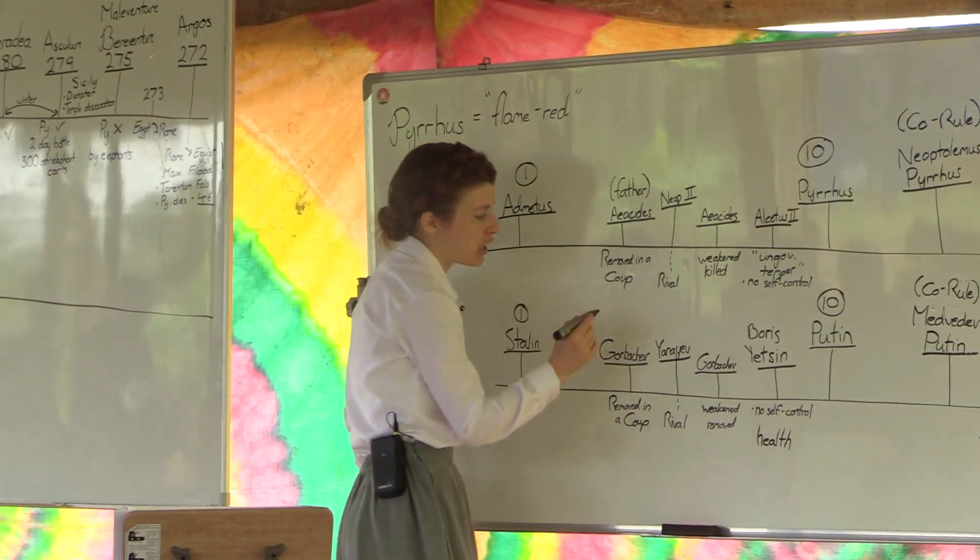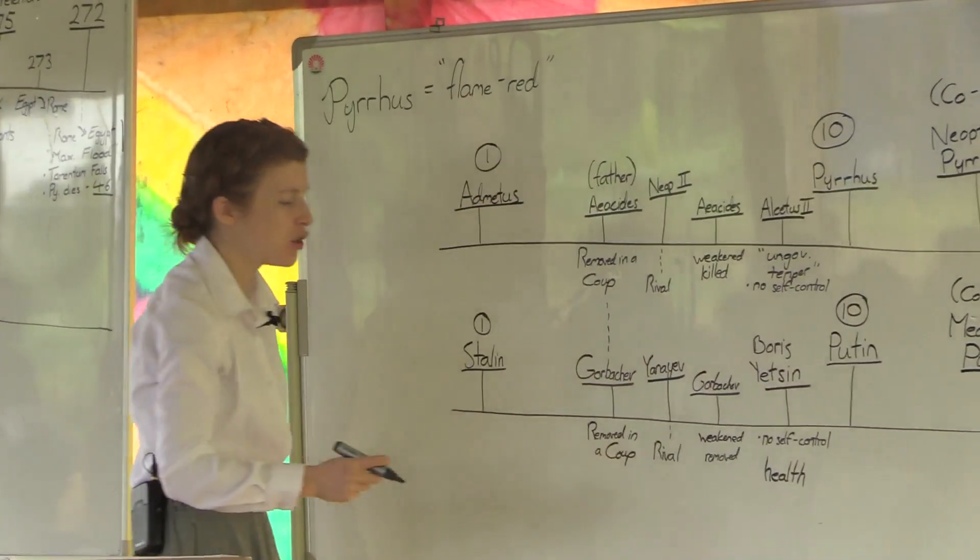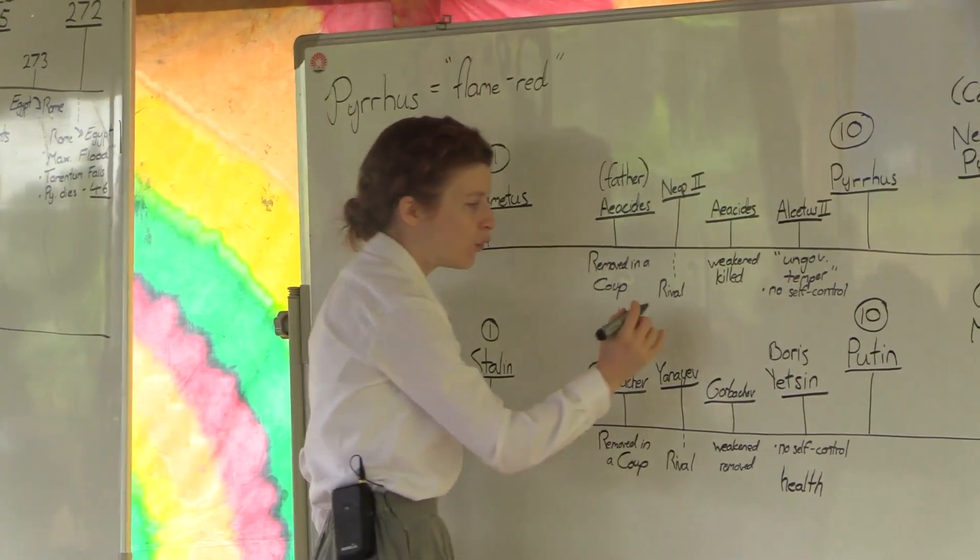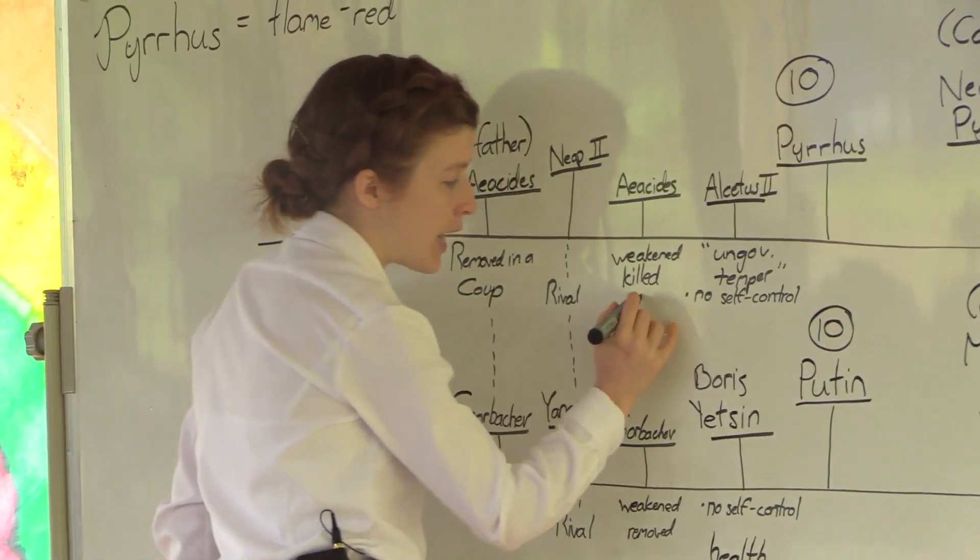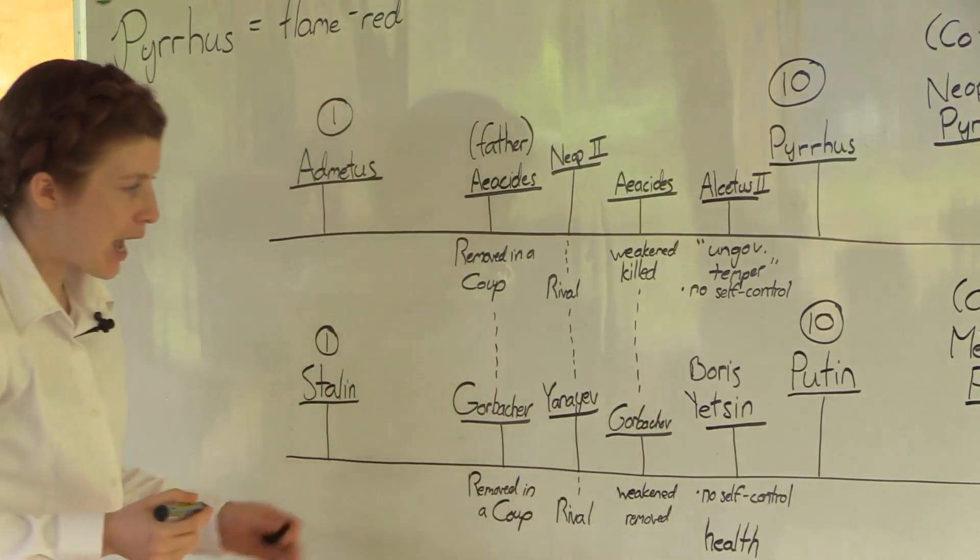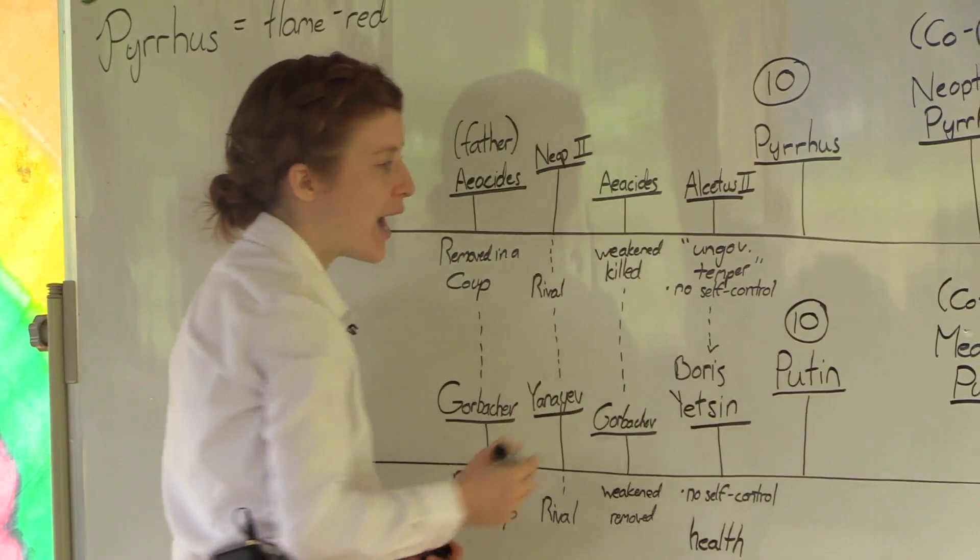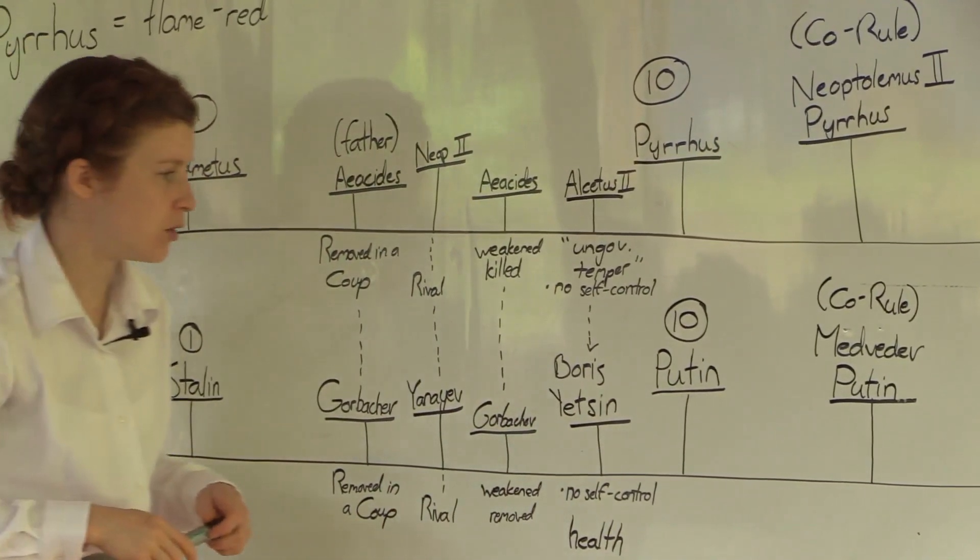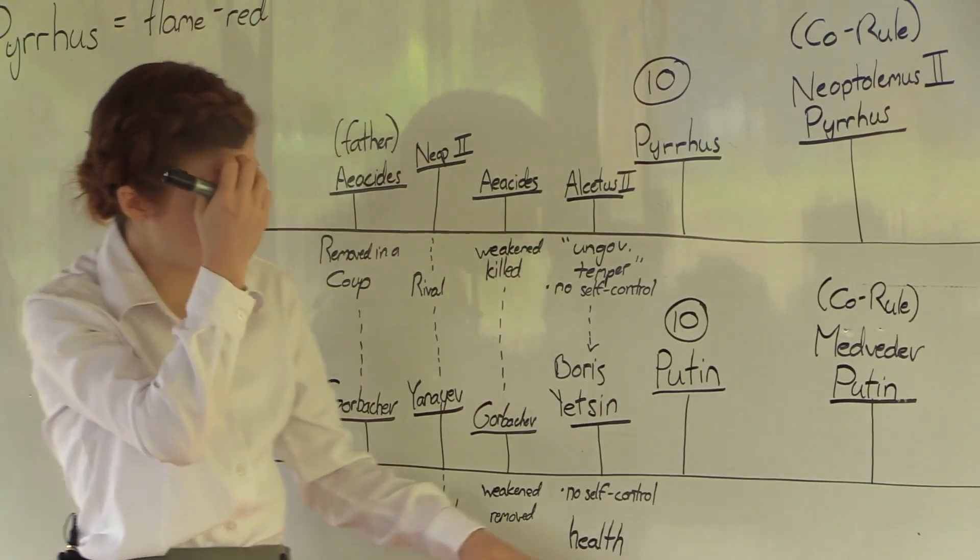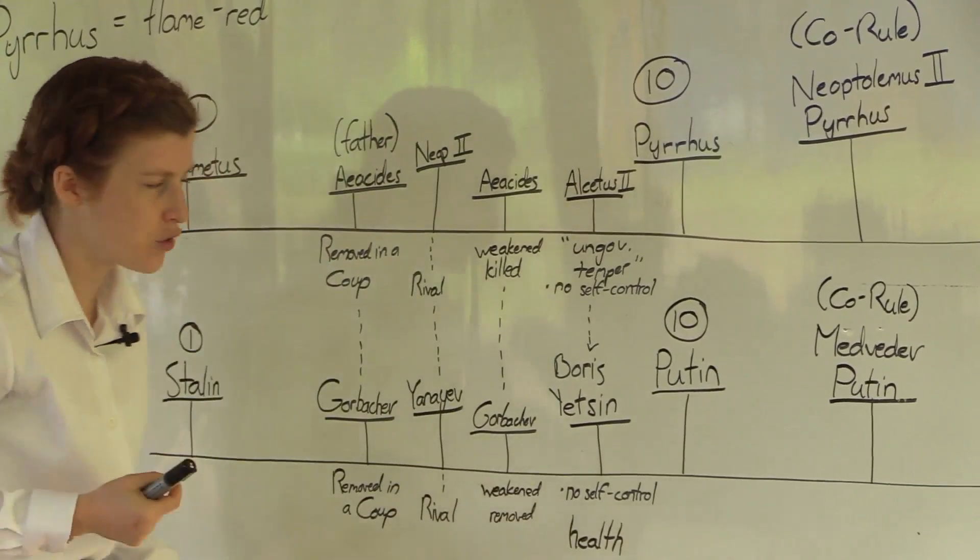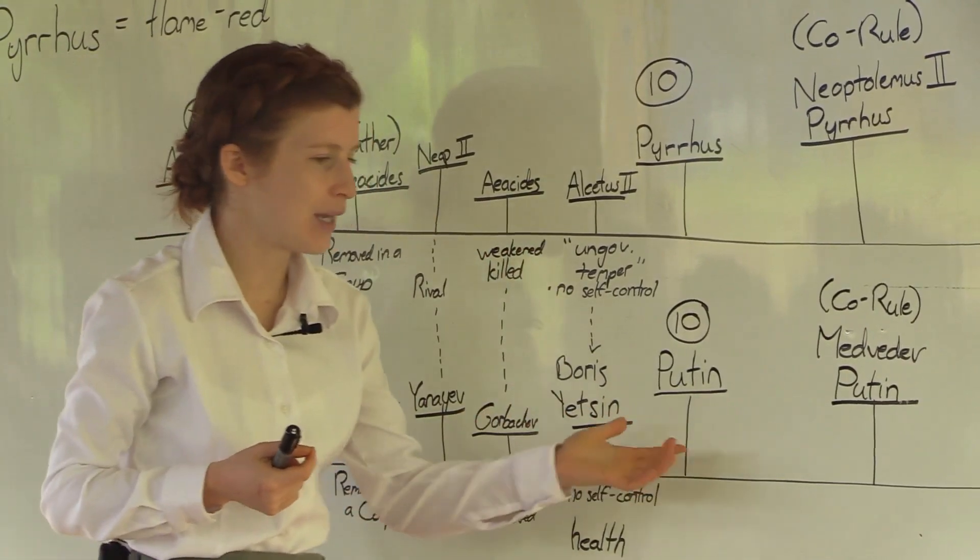So we can then see a relationship leading up to our tenth, to Pyrrhus and Putin, of a leader removed in a coup due to a war the people were tired of. A rival takes the throne for a short period of time. That leader that was removed returns but significantly weakened and in their place once they are forced out, killed or removed comes in their final option, another leader who has no self-control. This then relates to health when it comes to Boris Yeltsin. And then we see the strongest, most significant leader of that country, Pyrrhus in the history of Pyrrhus and Vladimir Putin come into the history of Russia.